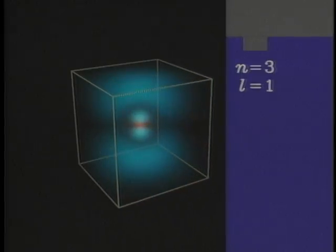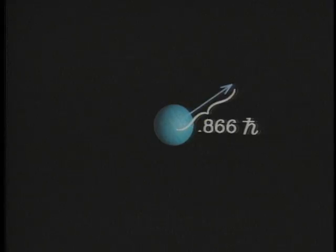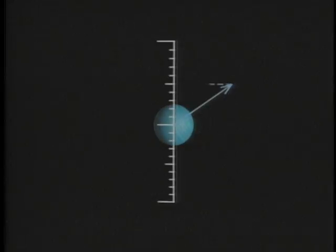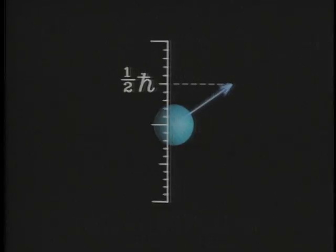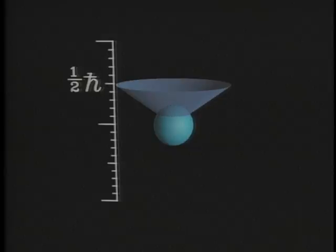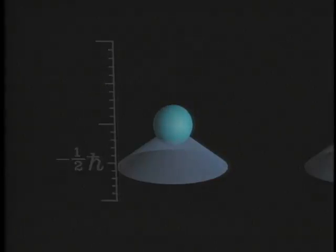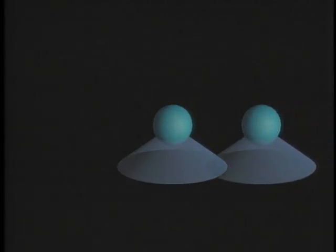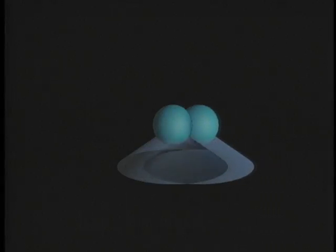But an electron also spins at a certain fixed rate. Just as certainty of position makes uncertain momentum, certainty of spin rate makes uncertainty of direction. It can only say that the spin is generally up or down. And since an electron is a wave, two electrons can interfere destructively or constructively.